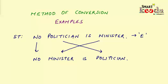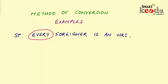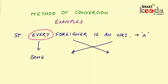Let's take another example: 'Every foreigner is an NRI.' You can see that this statement starts with the quantifier 'every,' which gives an inference of a universal class, and as the statement has no negatives, we'll mark it as an A-type statement — that is a universal affirmative kind. While converting an A-type statement, we just need to change the quantifier 'every' into 'some,' and the classes 'foreigner' and 'NRI' will get interchanged. The conclusion will be: 'Some NRIs are foreigners.'